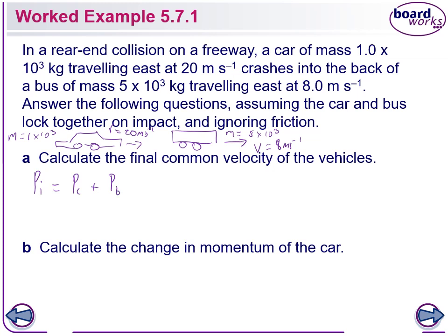The momentum of our car is just MV, so 1×10³ multiplied by 20, plus our momentum of the bus, which is 5×10³ times 8. So our initial momentum is 20,000 plus 40,000, which gives us 60,000 kilogram meters per second.